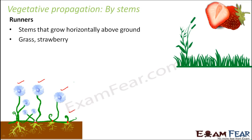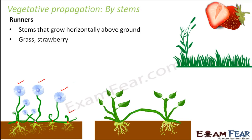Very similar stems in strawberry are given a different name — they are called stolons. If you see the strawberry plant, it grows almost parallel to the ground but is a little different in shape. This is often termed a stolon, which is present in strawberry.